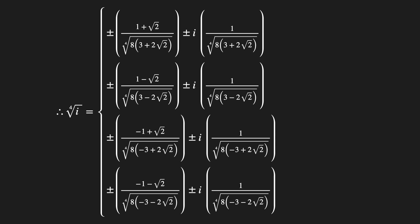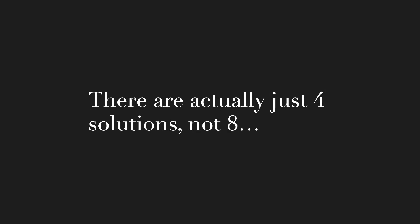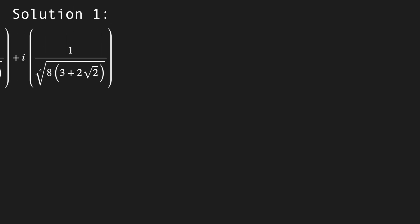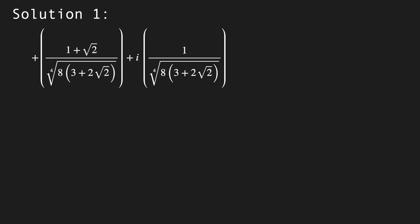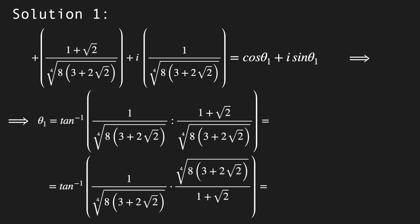After this tremendous amount of work, we finally found the solutions. We will notice an inconsistency with the pattern observed so far — namely that the fourth root gives us eight solutions. However, there are actually just four solutions, not eight. Let's carefully analyze each of them in terms of their angles in the unit circle, in order to find out which ones are duplicated. Using Euler's formula, we can find the angle theta by performing the inverse tangent of the complex part divided by the real part. This gives us two possibilities: pi over 8 or 9pi over 8.